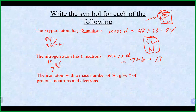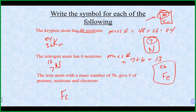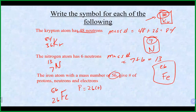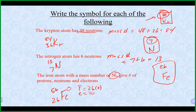For iron-56 with 30 neutrons given: the symbol is Fe, the atomic number from the periodic table is 26 (bottom left). The mass number given is 56. Protons = 26, electrons = 26 (no charge, so neutral), and neutrons = 56 minus 26 = 30.